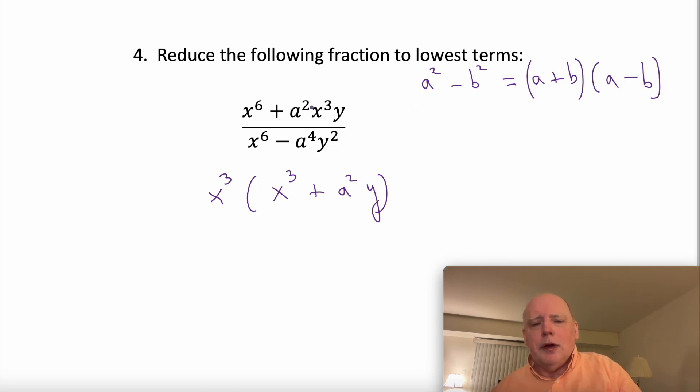Here a is going to be x to the third, and b is going to be a squared y. So we can write x to the sixth as x to the third squared, and we can write a to the fourth y squared as a squared y squared.